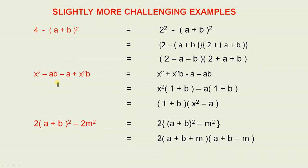Now x² minus ab plus x²b minus a. Now sometimes in order to do a sum like this, you rearrange the terms. So what I've done here, I've rearranged these terms here. This is exactly the same as what we have on the left hand side, except I've just rearranged the terms.